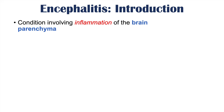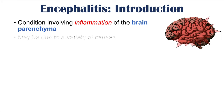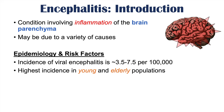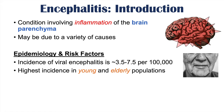Encephalitis is a condition involving inflammation of the brain parenchyma — it is inflammation of the brain tissue. The incidence of encephalitis, particularly viral encephalitis, which is the most common type, is estimated to affect 3.5 to 7.5 people per 100,000. It has the highest incidence in young and elderly populations, likely due to lower immune system functioning in those age groups.